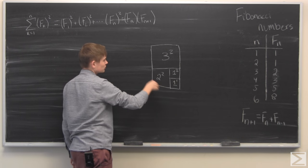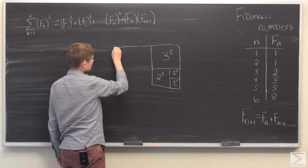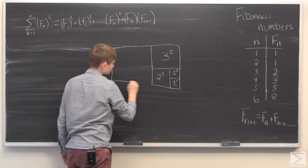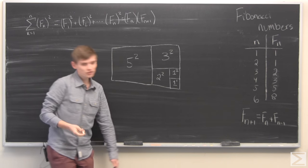And then we'll just do one more, which is 5 squared. And you'll see that these squares fit together quite nicely.